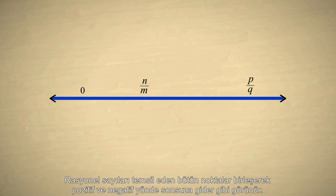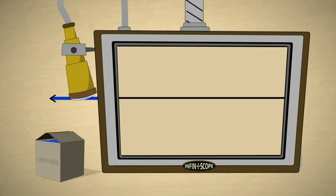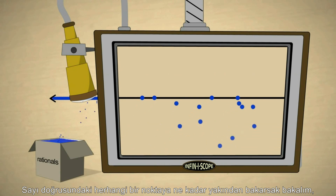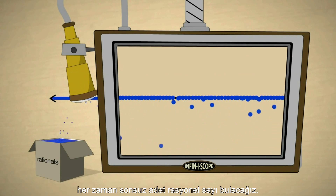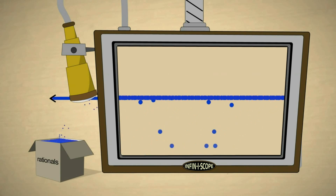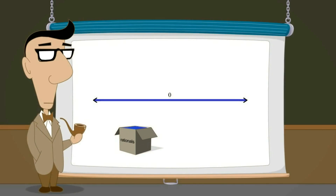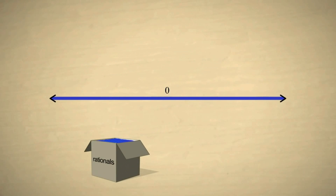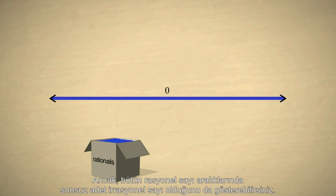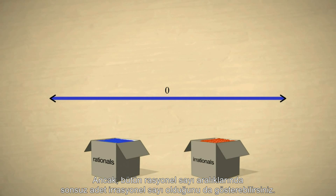...in both the positive and negative directions. No matter how close we zoom into any region on the number line, we will always find an infinite number of rational numbers. You might think that this would leave no room for gaps. However, you can also show that between any pair of rational numbers, there are an infinite number of irrational numbers.